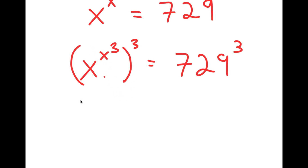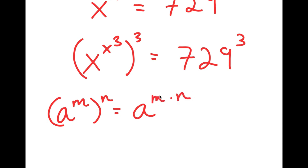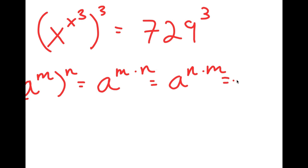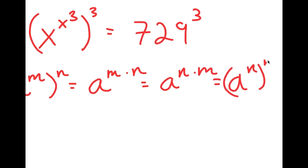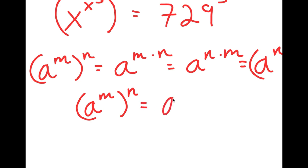Now, if I have something in the form a to the power of m to the power of n, this is the same thing as a to the power of m times n. Since m times n can also be rewritten as n times m, it follows that a to the power of m to the power of n is also equal to a to the power of n to the power of m.